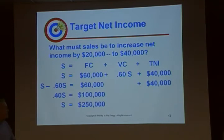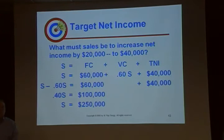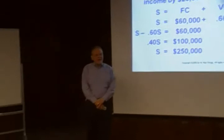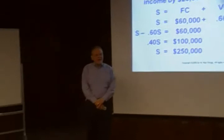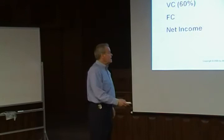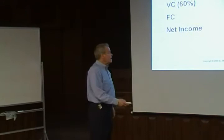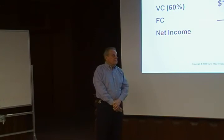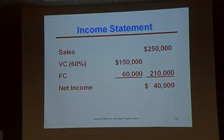Are you just going to accept that as your answer and move on? I'm the curious sort — I've got to know it's right, especially before handing that report to my boss for a board of trustees meeting. Let's verify: when sales are $250,000, subtract 60% variable cost, subtract $60,000 fixed cost, and you get net income of $40,000 — just like we were asked to determine. When sales are $200,000 we make $20,000; when sales are $250,000, we make $40,000. It's not one-to-one because of variable costs.